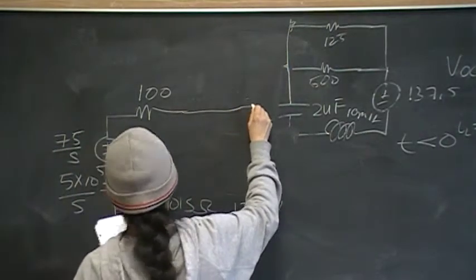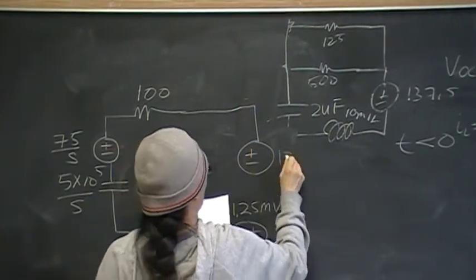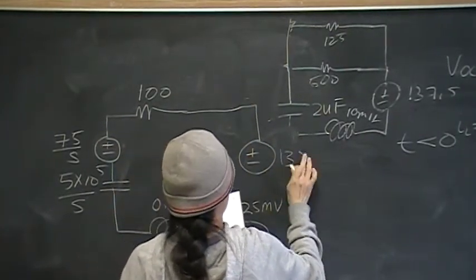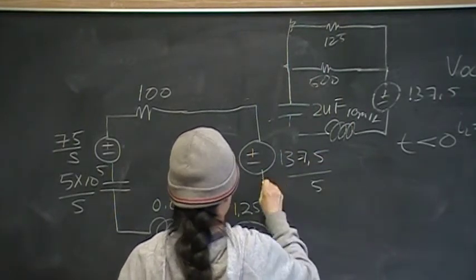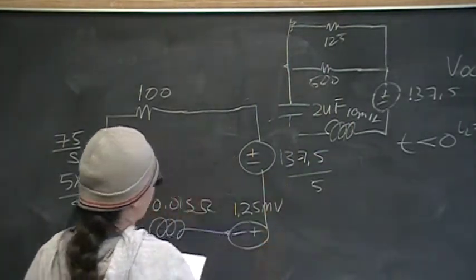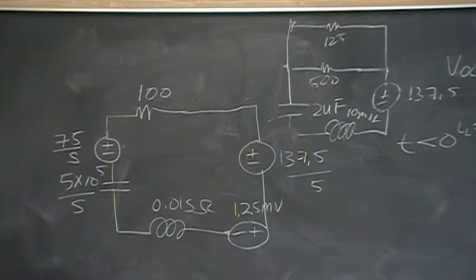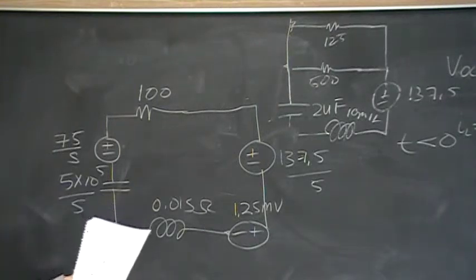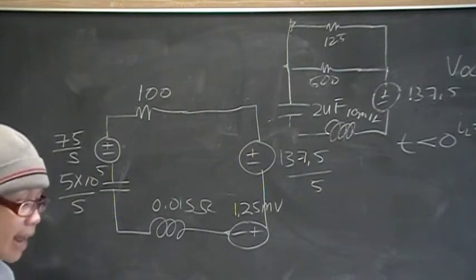And 137.5 over S is how independent voltage sources translate from the time domain into the S-domain. So this is our circuit in the S-domain, and that's the answer for part A.